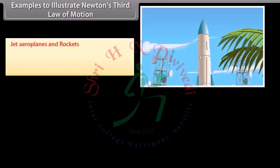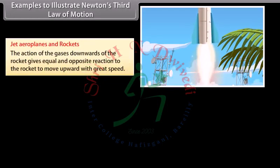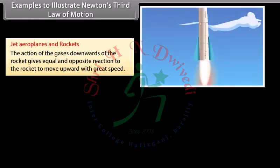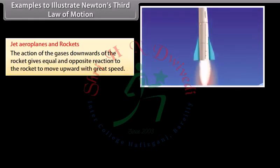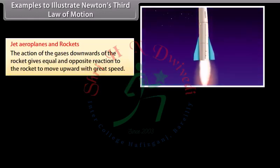Jet aeroplanes and rockets: The action of the gases downwards of the rocket gives equal and opposite reaction to the rocket to move upward with great speed.